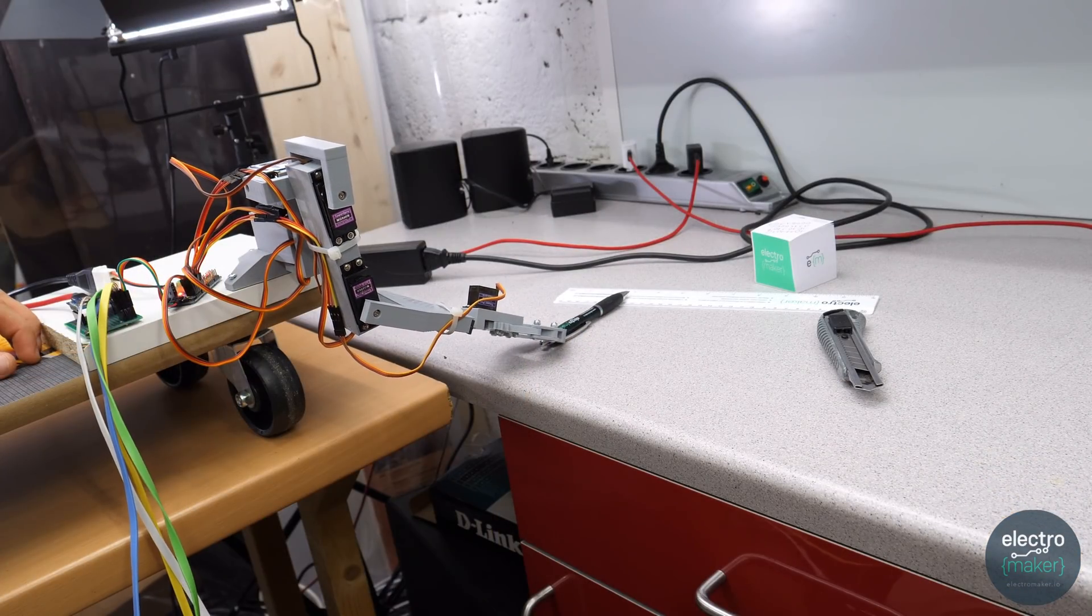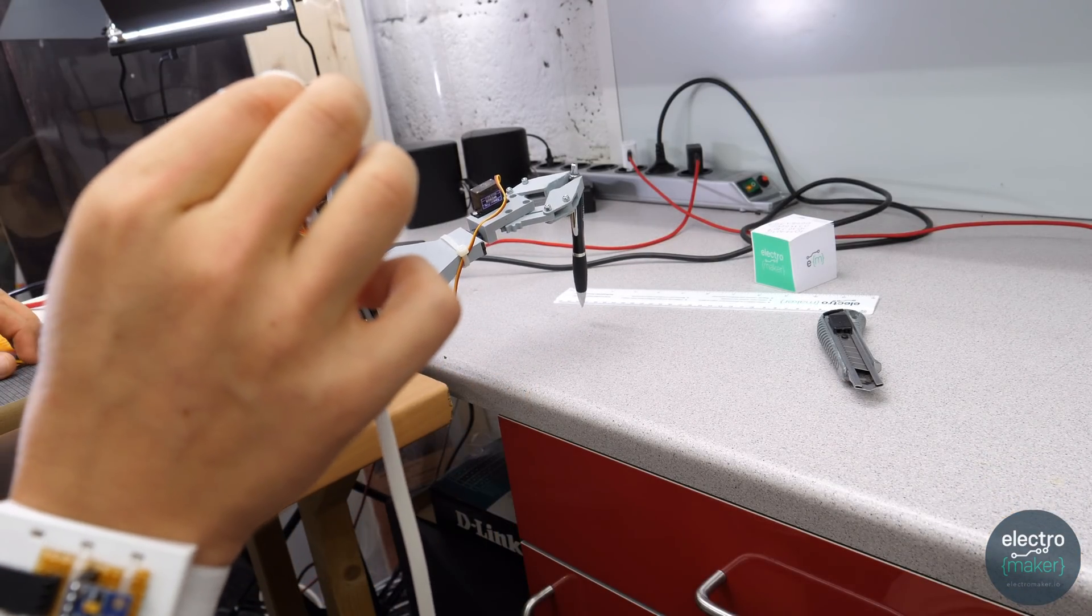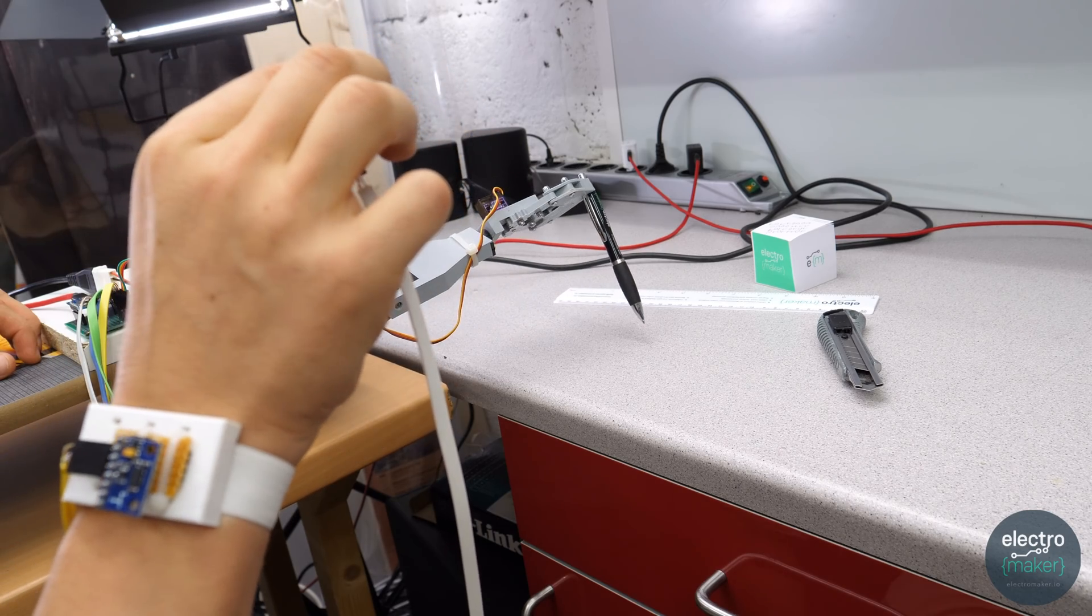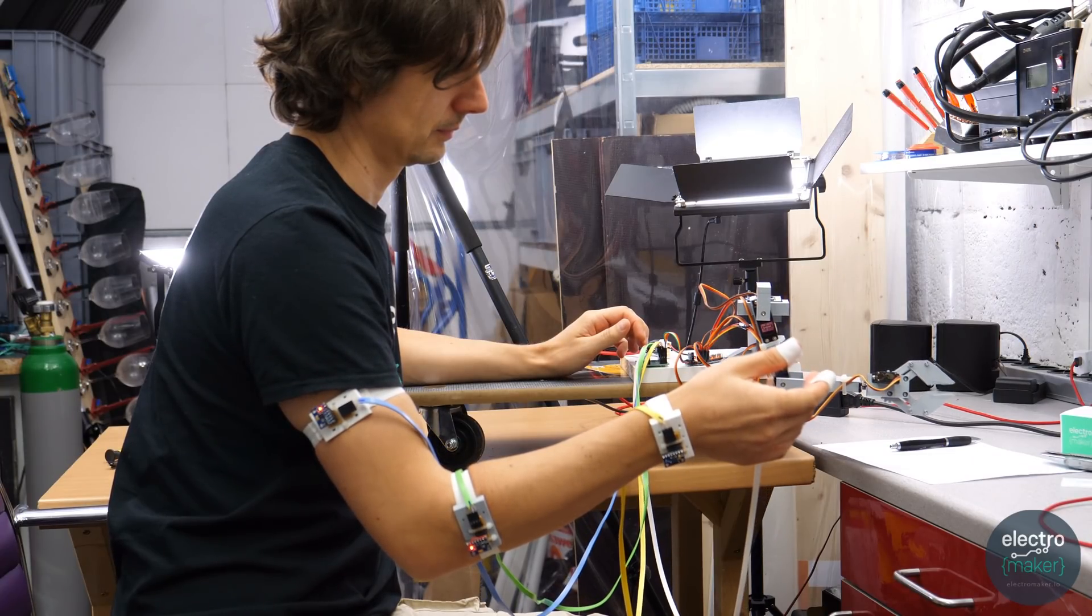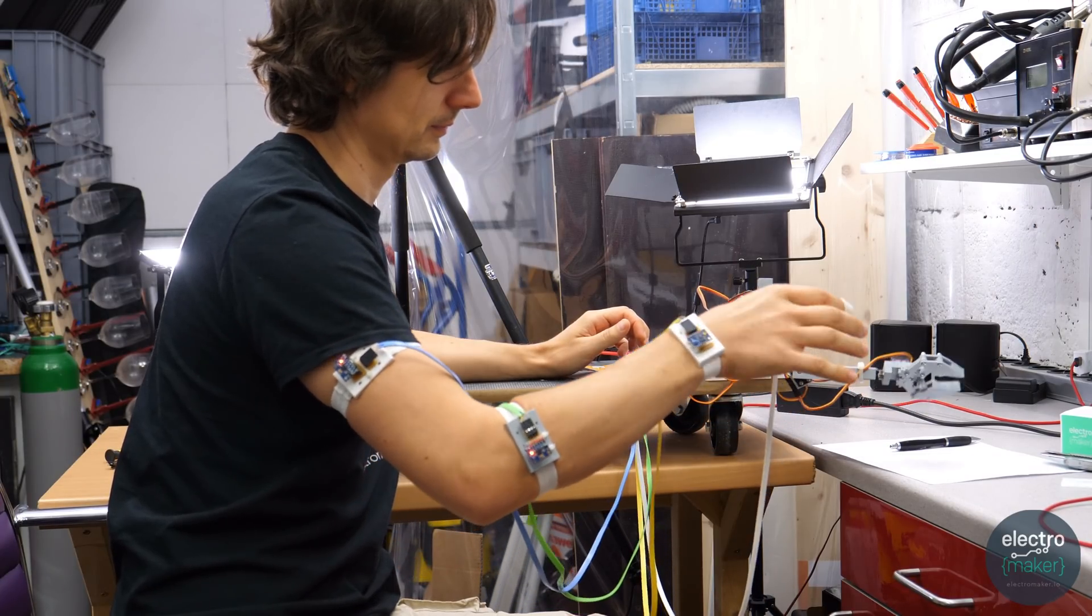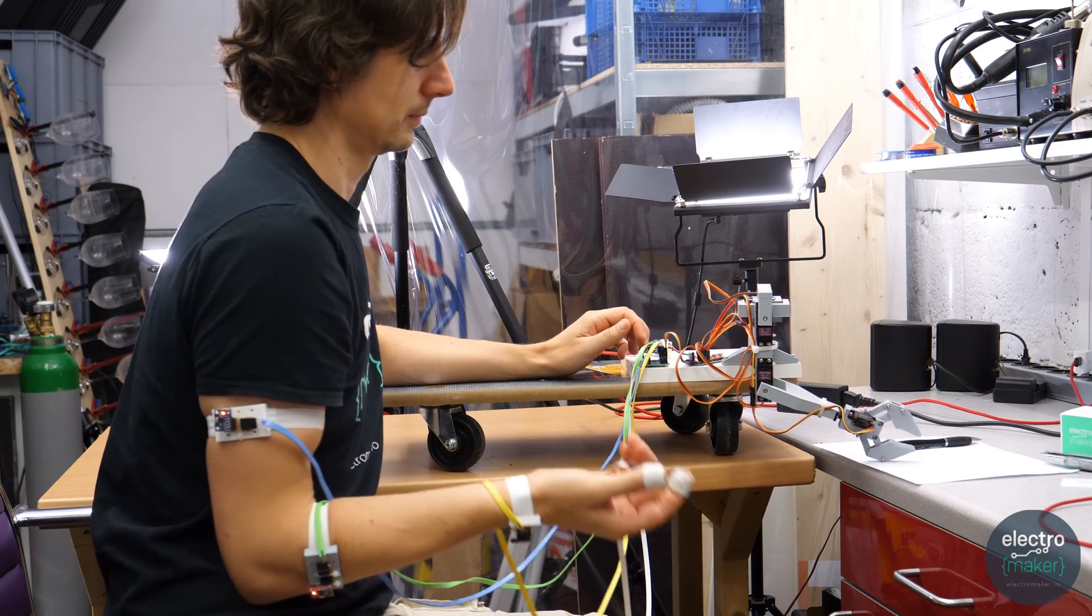It can move in 5 degrees of freedom and grab things using a simple gripper. With the sensors attached to the arm it's quite intuitive to control. The robot arm just tries to mimic your movements.